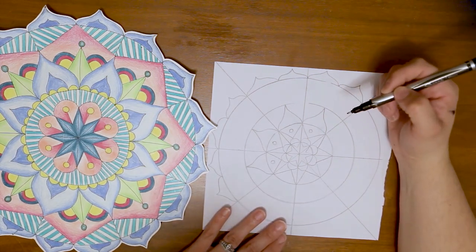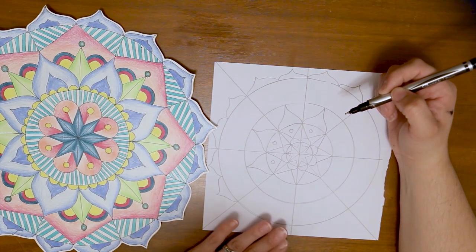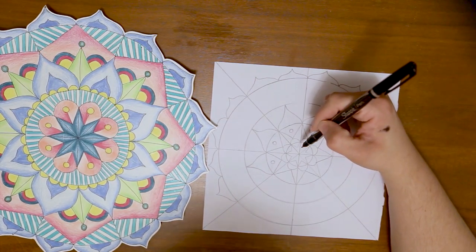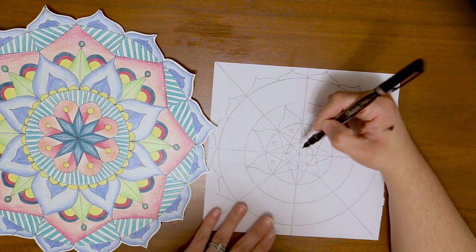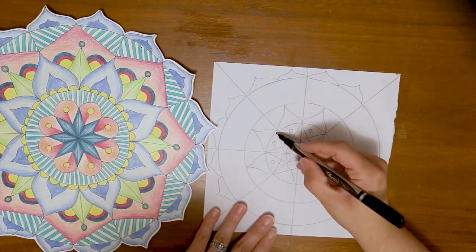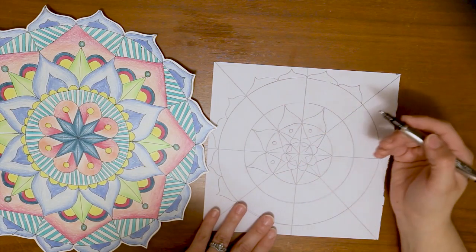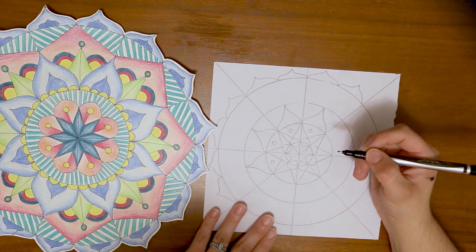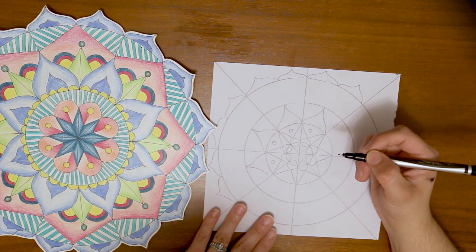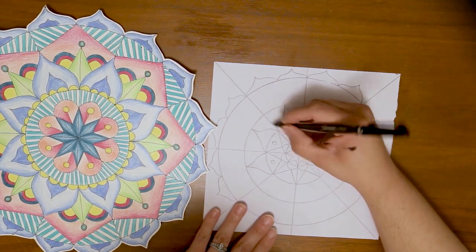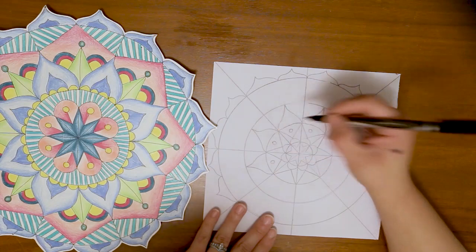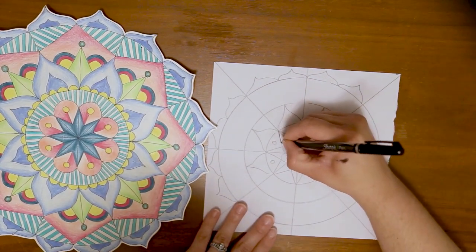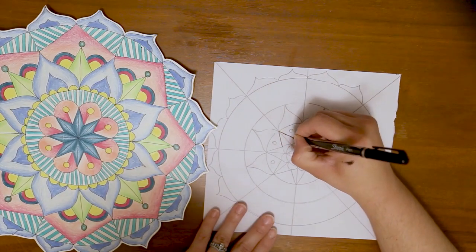Next, I like to take a black marker and trace over the parts of my mandala that I want to show. So some of these guidelines I might want to keep and some of them I might want to erase later. For this one here, I don't think I want that line that cuts through that petal shape, so I'm not going to trace that guideline there. I also don't think that I want to have those lines that run through here in that shape. So I'm not going to trace over that line. I'm only going to trace over the lines that I want to be part of my design.